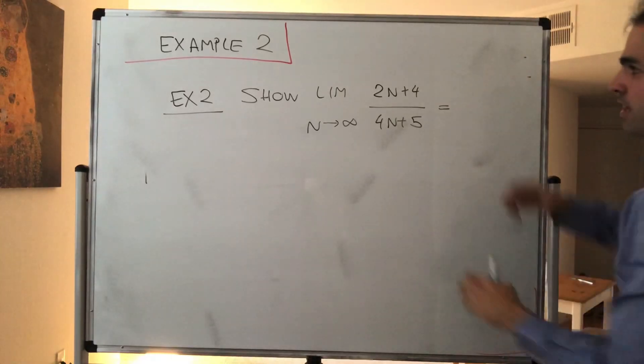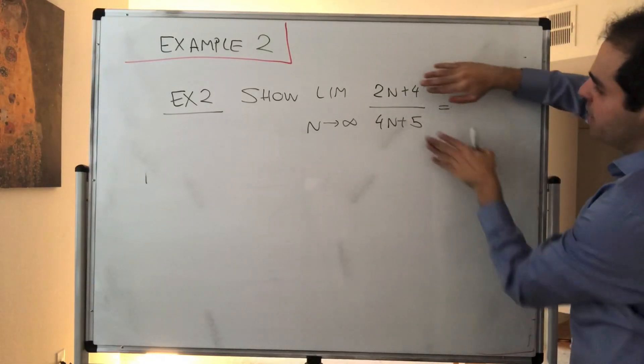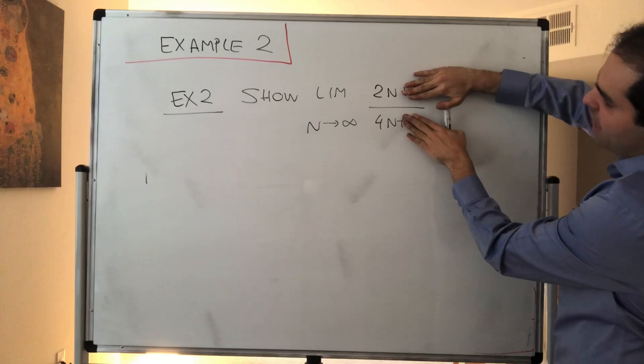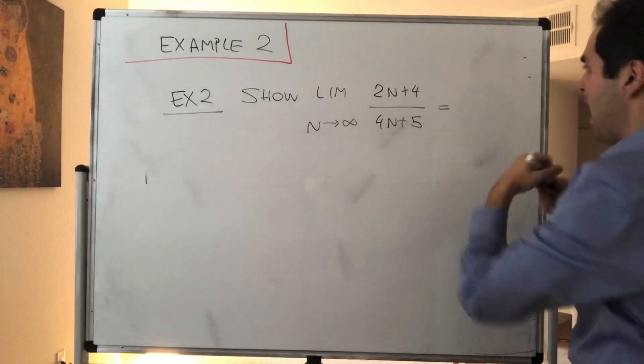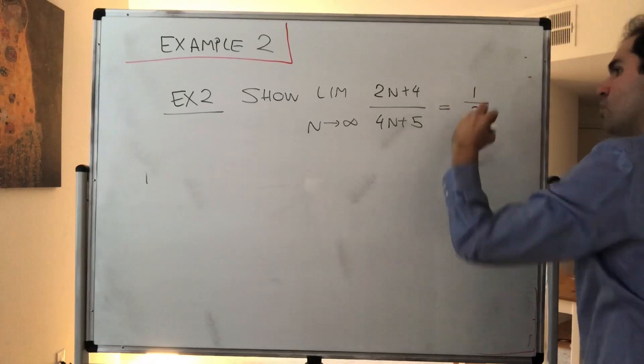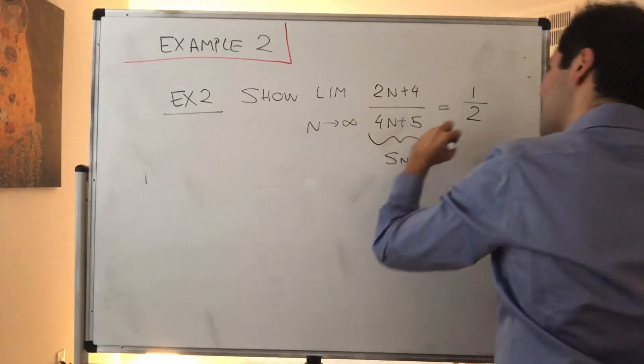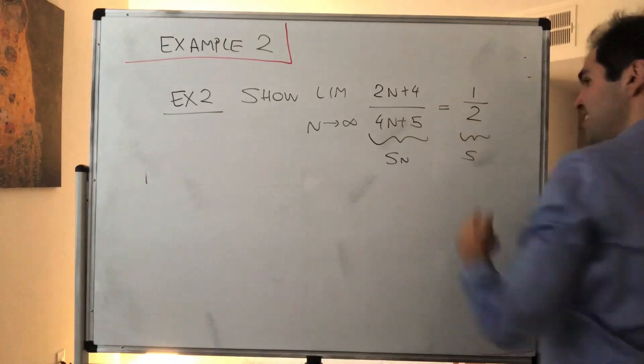So intuitively, those two terms are much bigger than those terms, so the fraction just becomes 2 fourths, which is 1 half. That's what you want to show. In particular, let this be Sn and let this be S.